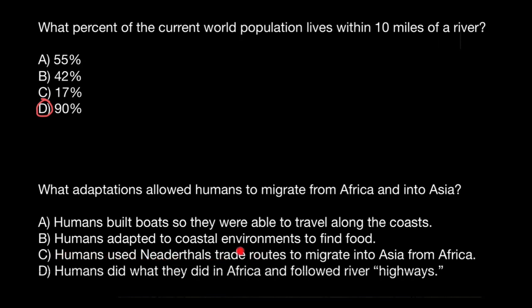Answer C — humans used Neanderthal strait routes to migrate into Asia from Africa — is also not true, especially in light of trade routes. Neanderthals didn't have any trade or trade routes. Answer D — humans did what they did in Africa and followed river highways — is the correct answer. Through all of human history, people didn't go far from sources of water. If now 90% of the population lives within just 10 miles from a river, in ancient times they simply had to live next to water, whether it was the ocean or a river.